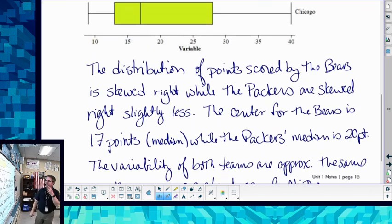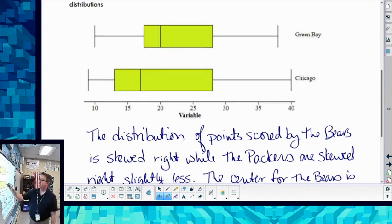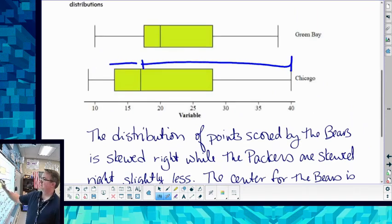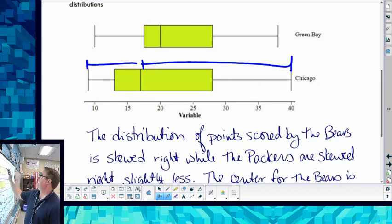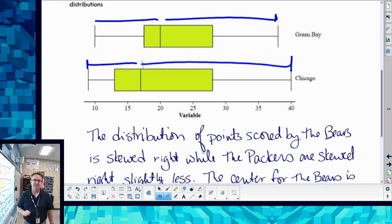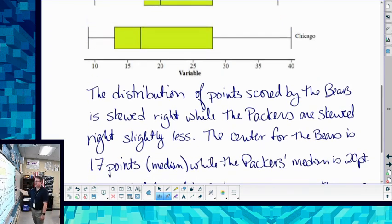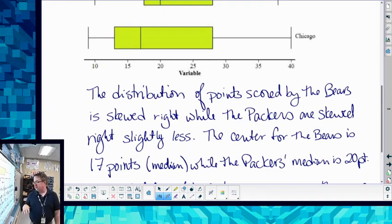So here's what I came up with: the distribution of points scored by the Bears is skewed right. Why is it skewed right? Because notice here, this distance here is bigger than this distance here. Packers kind of have the same thing, but it's not quite as extreme as the Bears.